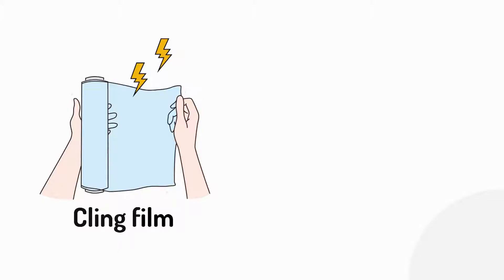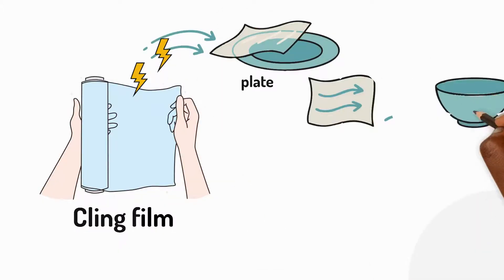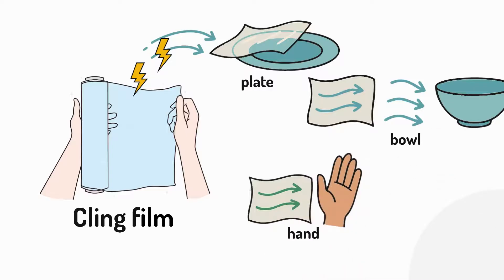Once it's charged, the cling film can stick to plates, bowls, or even your hands without touching them first. This happens because the charge creates a non-contact force that pulls the film towards the objects without actually touching them. That's why cling film sometimes seems to jump onto a surface.